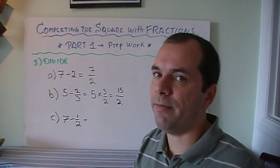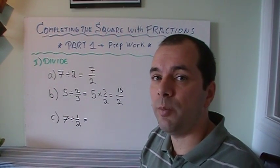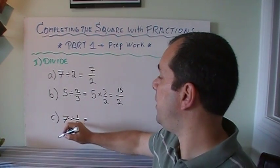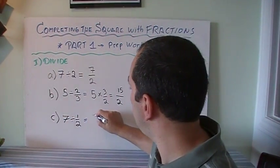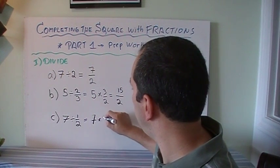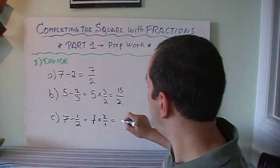7 divided by 1/2. It's not the same as 7 divided by 2, obviously, right? And you'll be maybe surprised when you see that if I divide by a fraction, it's like multiplying by the reciprocal. So 7 times 2/1. Well, 2/1 is just 2. So 7 times 2 is 14.